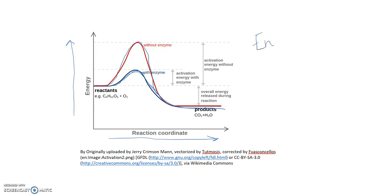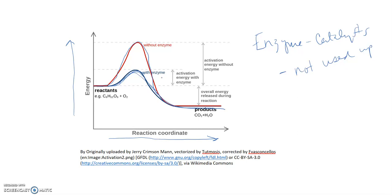That's why an enzyme is a catalyst — it's getting the reaction moving forward. An important thing to know is that an enzyme is not used up in the reaction. An enzyme can assist in a reaction and then turn around and do the same thing again. It is not used up like lighter fluid that starts a charcoal fire — that catalyst is used up, but an enzyme is not.